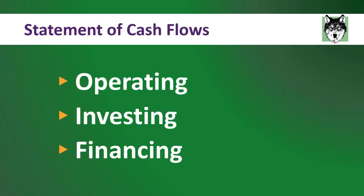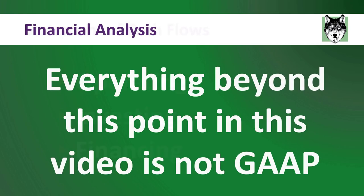Your statement of cash flows is split up into three sections: operating, investing, and financing. Now I'm going to stop here because everything beyond this point in this video is not GAAP. GAAP, or Generally Accepted Accounting Principles, says that you write your statement of cash flows with three categories for your investors. What I'm going to tell you is that you need to do even more work on top of this.